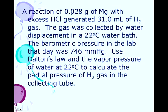Our reaction begins with 0.028 grams of magnesium with an excess of hydrochloric acid generated 31 mL of hydrogen gas. Gas was collected by water displacement, just like what we did in a 22-degree Celsius water bath. Barometric pressure in the lab that day was 746 millimeters of mercury, so that's kind of low. I'd guess it was storming outside this day. We used Dalton's Law, the vapor pressure of water at 22 degrees Celsius, to calculate the partial pressure of hydrogen gas in the collecting tube. So, the first thing is just to calculate the pressure of hydrogen gas.